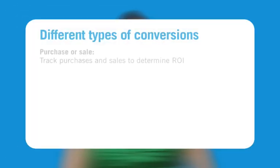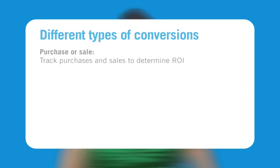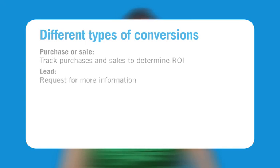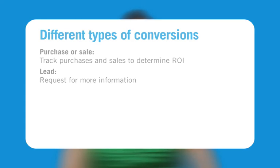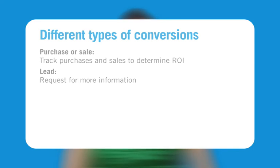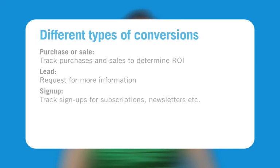The purchase or sale label helps online commerce sites track purchases and sales to determine return on investment. The lead label tracks how many users reached a point in your website at which they contacted your company, such as completing a request for more information form on your website.